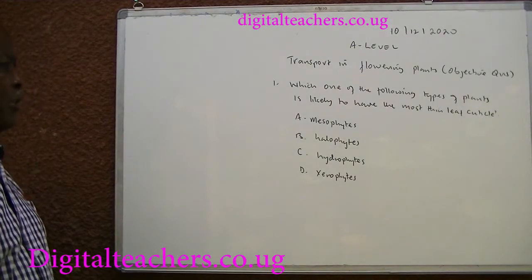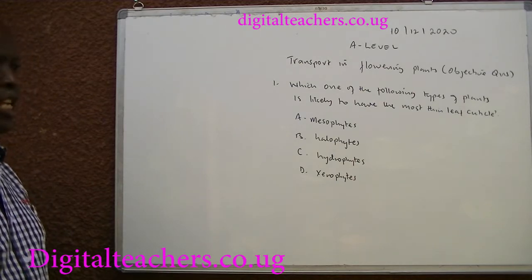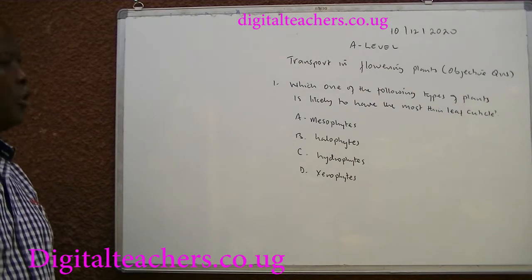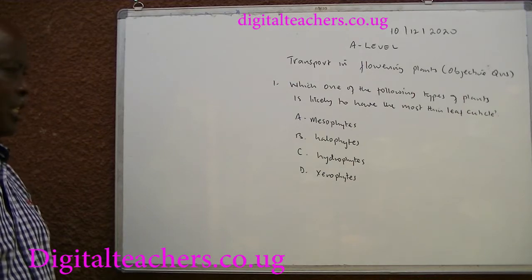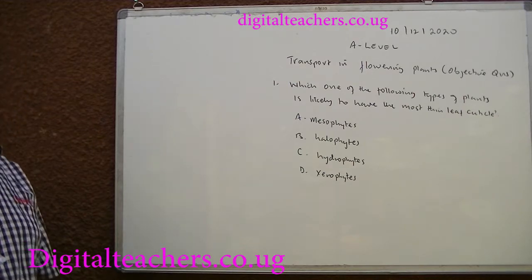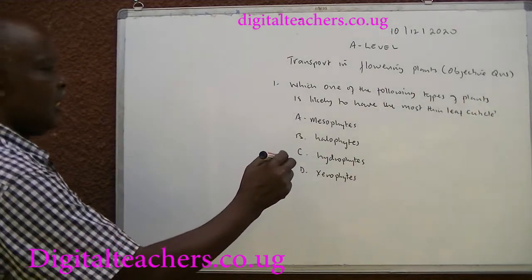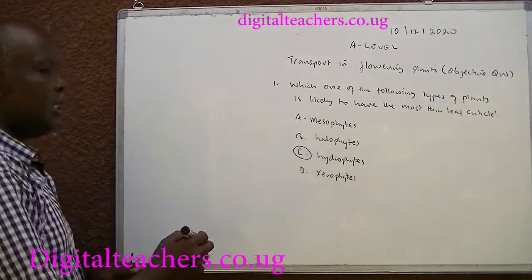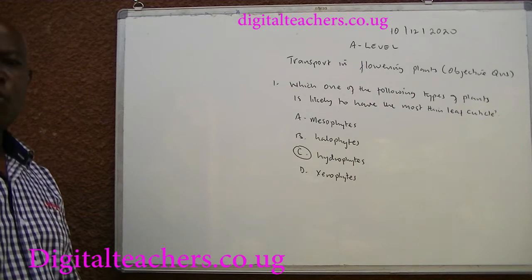Number 1. Which one of the following types of plants is likely to have the most thin leaf? A. Mesophytes. B. Herophytes. C. Herophytes. D. Herophytes. You can pause and answer. The answer is C. Herophytes don't have to conserve water.